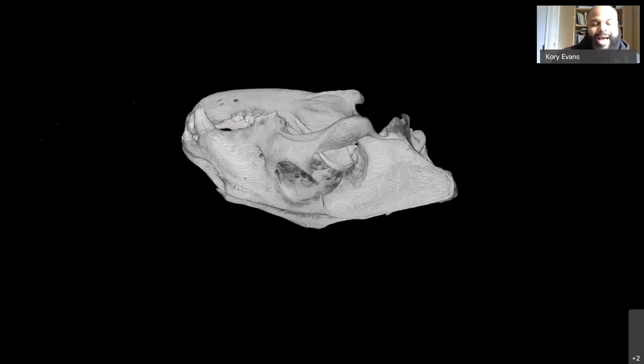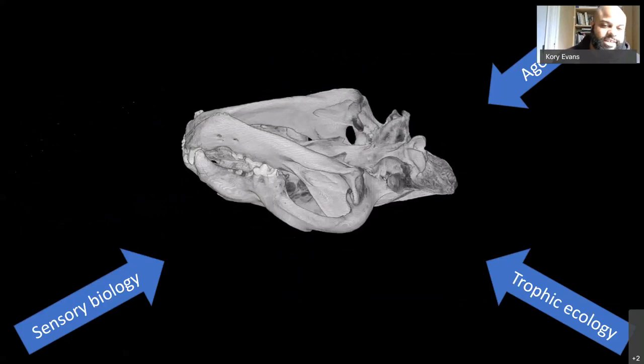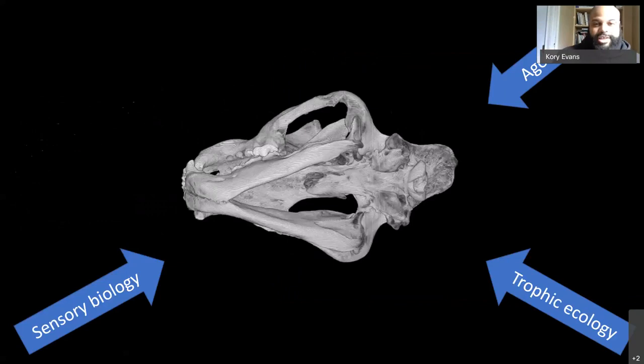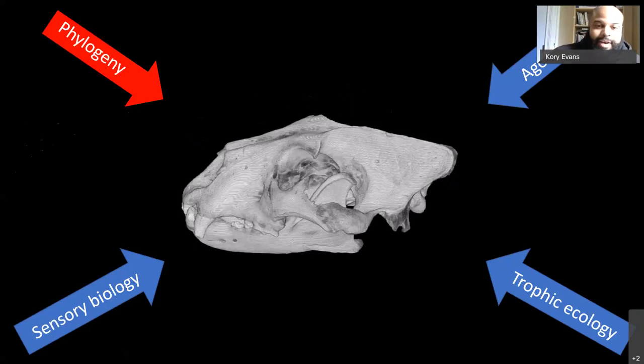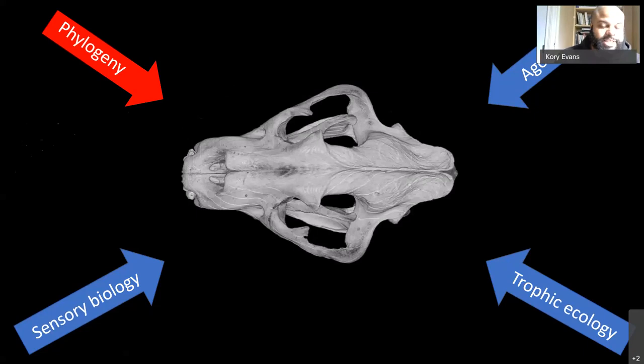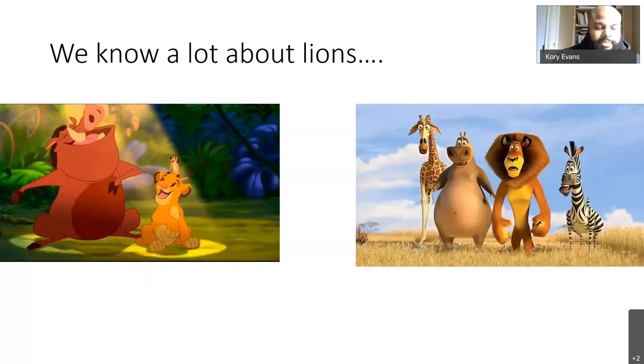I picked male lions because they engage in intraspecific aggressive interactions with other males. These lions hit each other in the face all the time with seemingly minimal damage, because the male lion skull is robust and fortified to absorb facial blows. You can imagine the skull and all its individual functions as separate vectors of selection exerting pressure, with some arrows opposing each other — representing trade-offs these animals must navigate. A fourth arrow is phylogeny — the history of how the skull has responded to selection and a roadmap for the future.